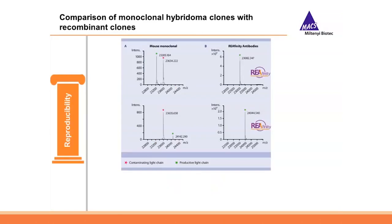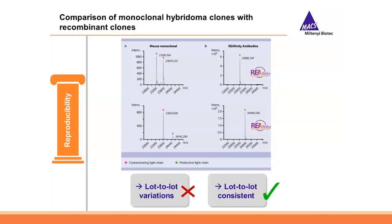Antibodies derived from hybridoma cell lines can have impurities from the myeloma cell line or from serum used for cultivation. Using mass spectrometry we compared a hybridoma-derived antibody with a recombinant antibody, looking for light chains. The hybridoma monoclonal antibodies contain a second, unwanted contaminating light chain, whereas Reaffinity antibodies contain only the intended light chain from the defined DNA sequence. This demonstrates that recombinant antibodies ensure high lot-to-lot consistency and are highly reproducible compared to traditional hybridoma technology.